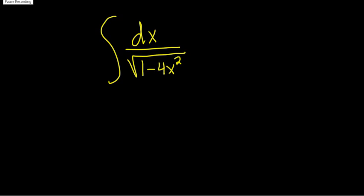In this problem, we have to integrate 1 over the square root of 1 minus 4x squared. Solution. So the idea here is to rewrite this to use a formula.